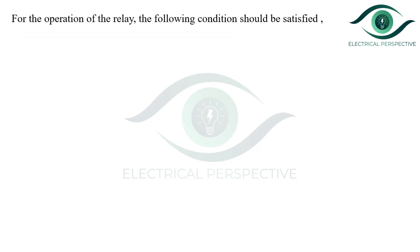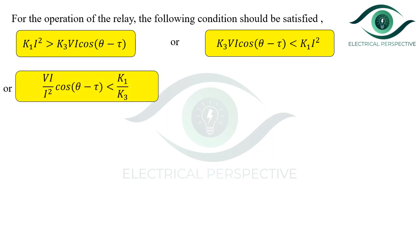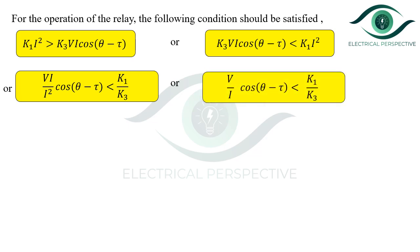For the operation of the relay, the operating torque must be greater than the restraining torque. The restraining torque is provided by K3·VI·cos(θ − τ) and the operating torque by K1·I². Simplifying, we get (V/I)·cos(θ − τ) < K1/K3, which gives Z_seen·cos(θ − τ) < K1/K3. Here V/I is the impedance seen by the relay, and K1/K3 is a constant equal to X_s, the preset value of reactance — the reach of the reactance relay.